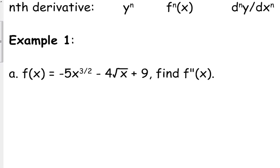So if this is our function, negative 5x to the 3 halves minus 4 square root of x plus 9, and we want to find the second derivative, then we start with the first derivative. f prime of x is negative 5 times 3 over 2x to the 1 half minus 4 times 1 half x to the negative 1 half. Derivative of 9, it's a constant, so it's 0.